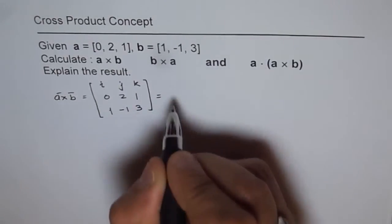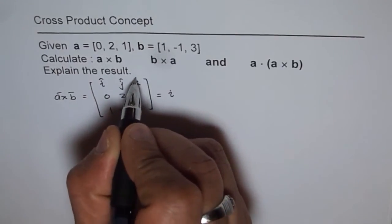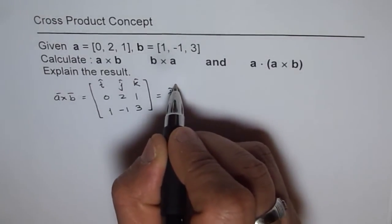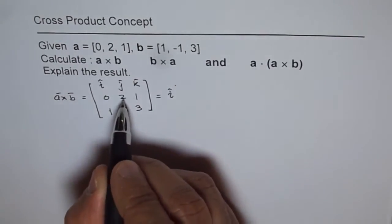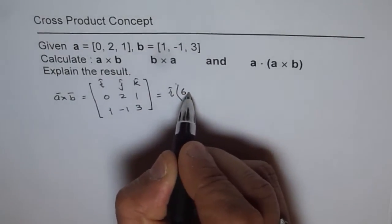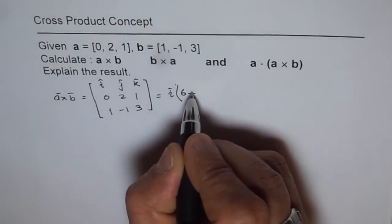This equals I times - I, J, K are unit vectors. I will write them like I is the unit vector along X axis times 2 times 3 which is 6 minus minus 1 times 1 which is minus 1, so it becomes plus 1.